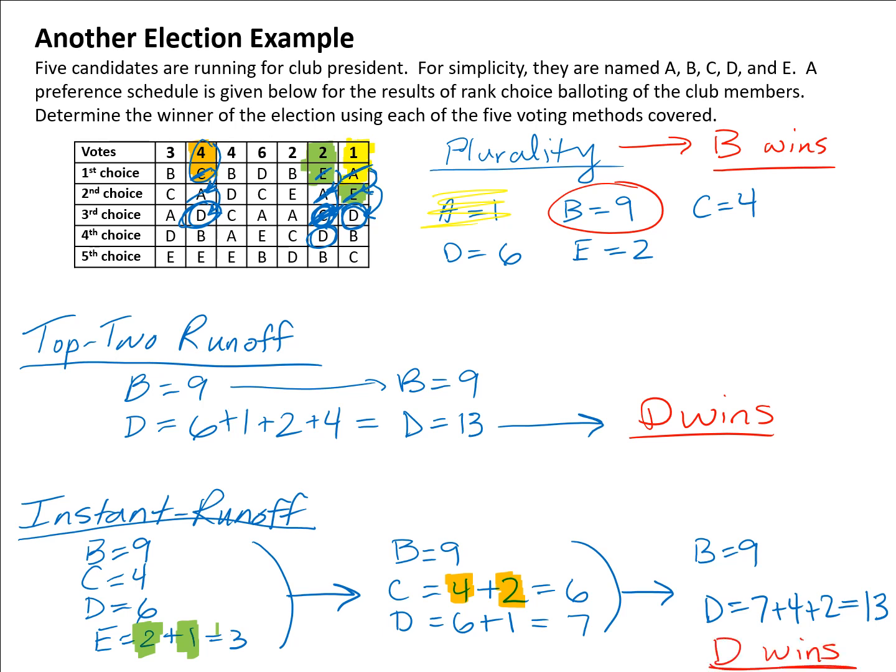It ends up giving us the same result as top two runoff, though that's not always the case when you eliminate candidates one at a time. But in this example we do get the same result from both runoffs. So to summarize: with plurality B wins, with top two runoff D wins, and with instant runoff D wins.